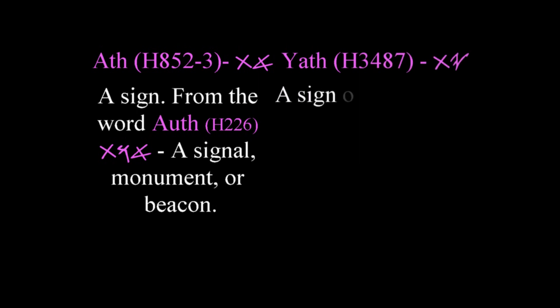Second, here's Yath, which is a derivative — actually an Aramaic version of Ath. It is also a sign, but it refers to the verb. So when we talk about words like Yaud, Yath is a sign of Yaud. Yaud is the verb; Yaud means to praise. If you were to look up Yaudah, one of Yashorel's sons, his mother Leah says, 'Yaud' — I give Yaud praise, I've got another son. So that's an action word.